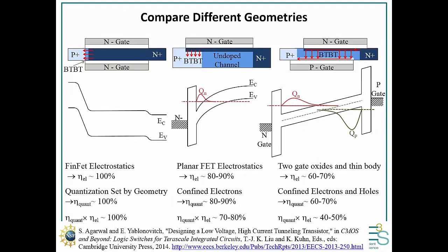Now let's look at actual efficiencies for different device geometries. For a FinFET or nanowire-type geometry, you can have very good gate electrostatics — nearly 100% electrostatic gate efficiency — and also 100% quantum confinement efficiency, because the quantum well thickness is fixed by the geometry. So you can have very high efficiency in this type of lateral junction. The drawback is that you're tunneling in a very narrow area and need a doped source, which can impact the bandedge.